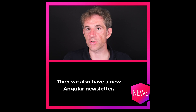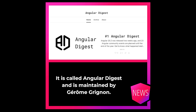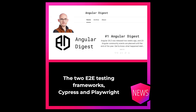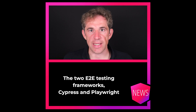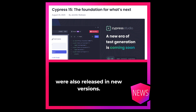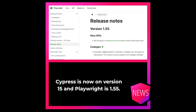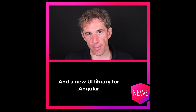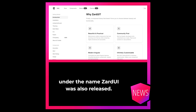We also have a new Angular newsletter called Angular Digest, maintained by Jerome Grinot. The two end-to-end testing frameworks Cypress and Playwright were also released in new versions — Cypress is now on version 15 and Playwright is on version 55. And a new UI library for Angular under the name SardUI was also released.